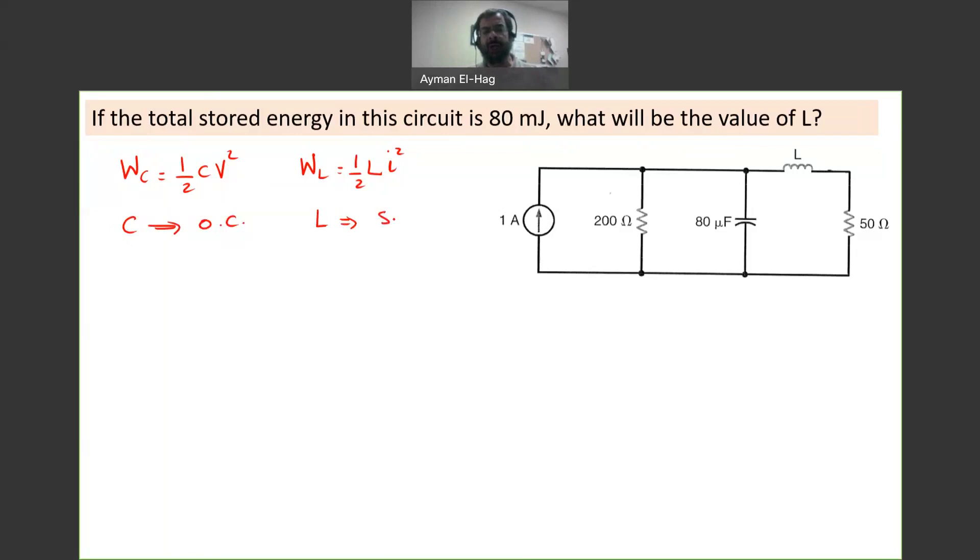So we need to redraw the circuit assuming it is fully charged. Replace any capacitor in the circuit with an open circuit, any inductor in the circuit with a short circuit, then find the voltages across all capacitors and the current across all inductors, and then apply the energy formula.